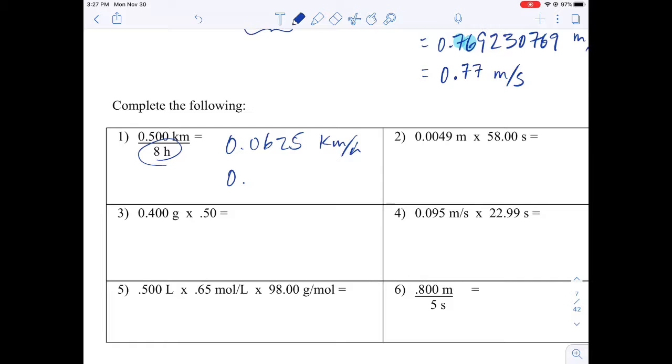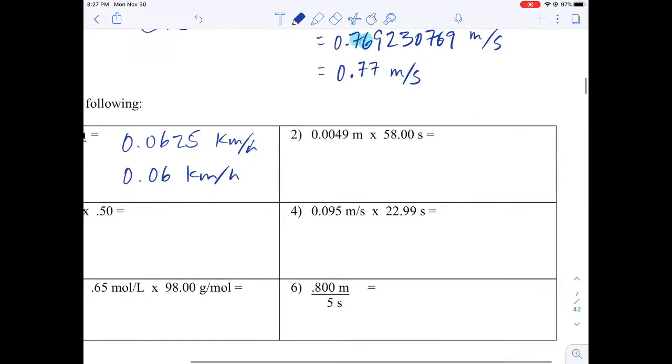But the kilometers is one sig dig, so this is going to be 0.06 kilometers per hour. And the next, I've got 0.0049 times 58.00. It gives me an answer of 0.2842 and this will be meters times seconds.